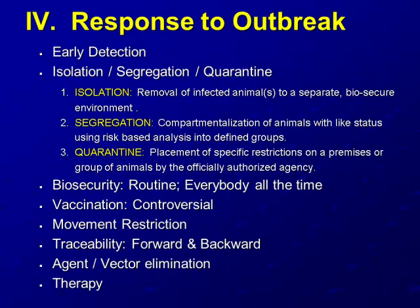In response to an outbreak, early detection is imperative. I use three terms with distinct definitions. Removing and isolating the index animal from the population is the first and maybe the most important thing we can do initially. Segregation means compartmentalization of animals into like groups — we commonly test at seven-day intervals to put horses in like groups. Quarantine means the placement of specific restrictions on either a premises or a group of animals by the officially authorized agency.